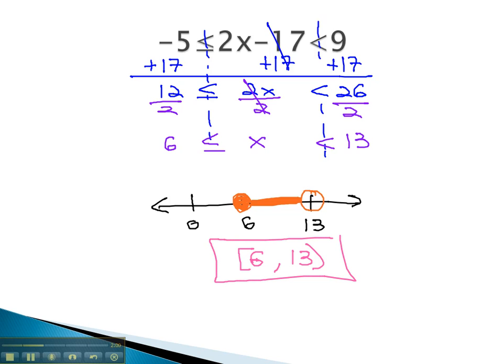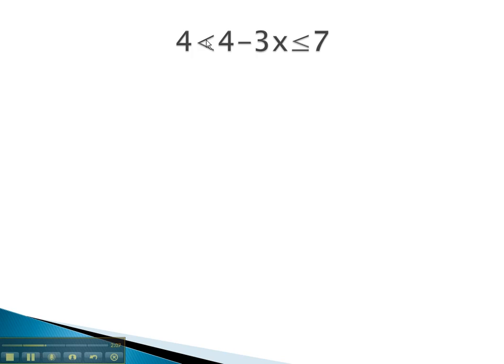Let's take a look at another example where we solve a tripartite inequality. In this problem, again, we will balance all three parts by first subtracting 4, working to get the x alone in the middle.